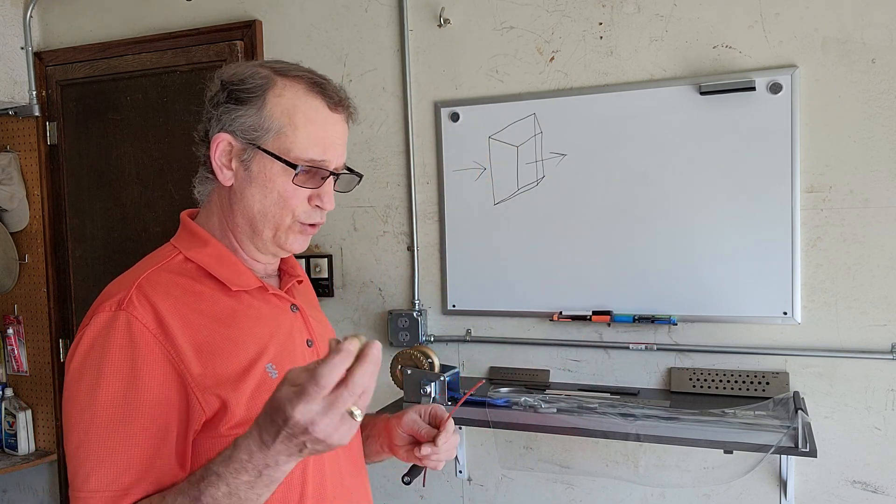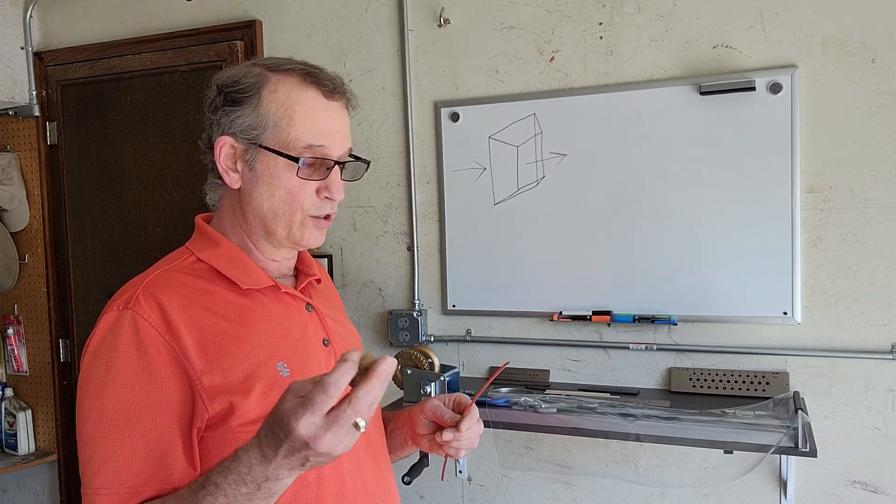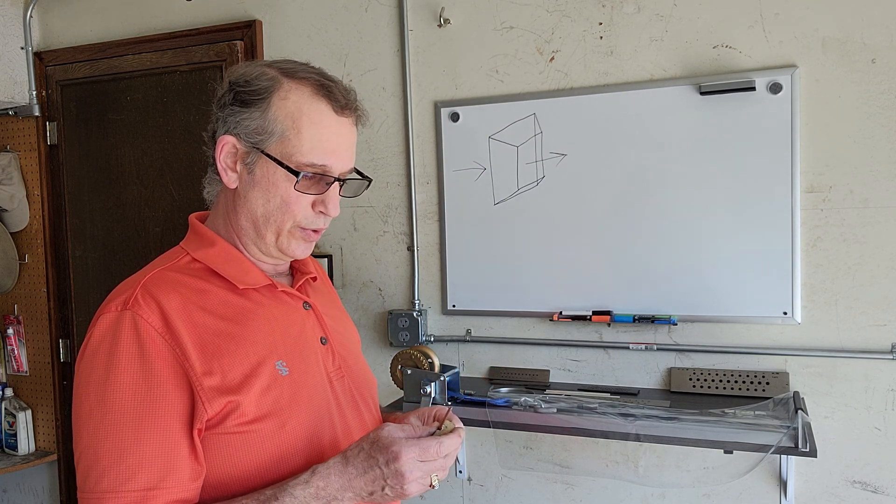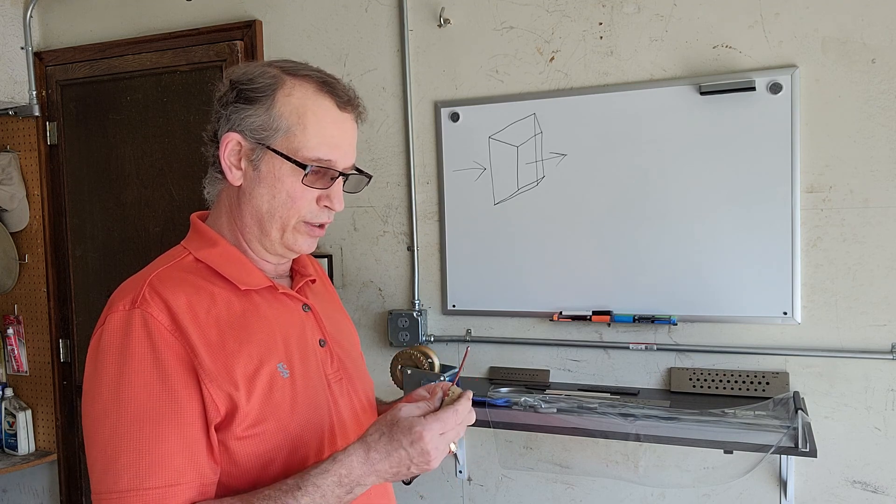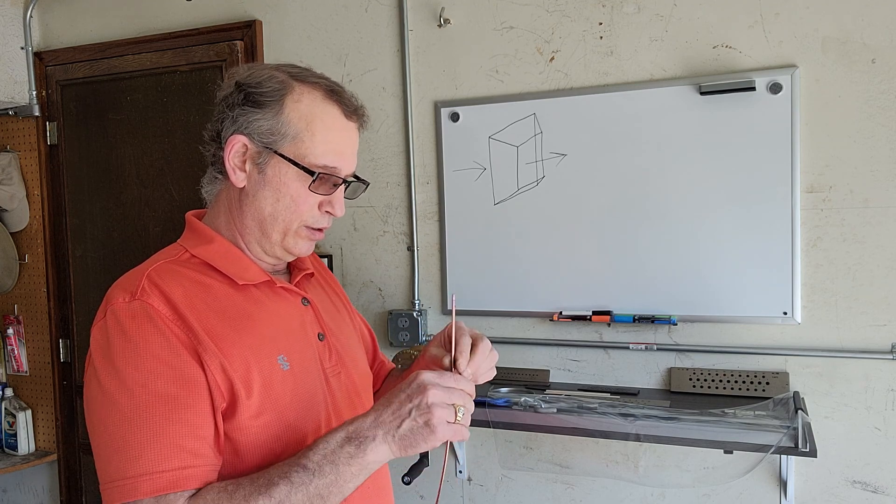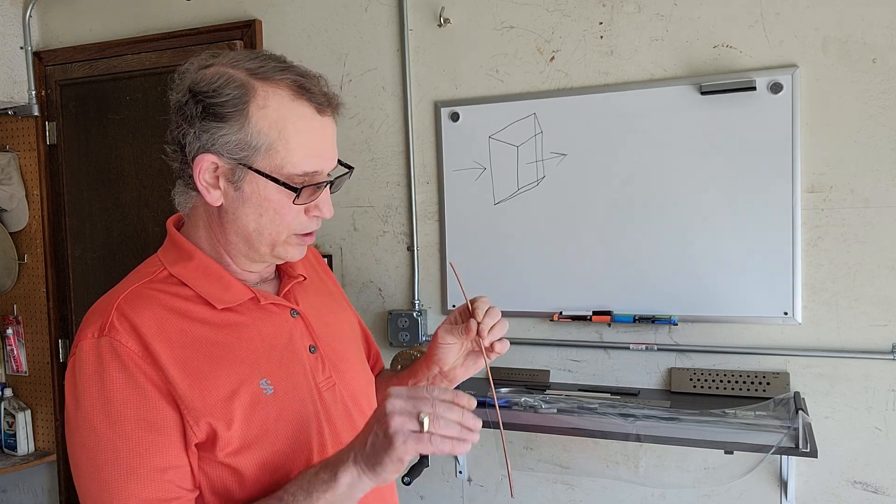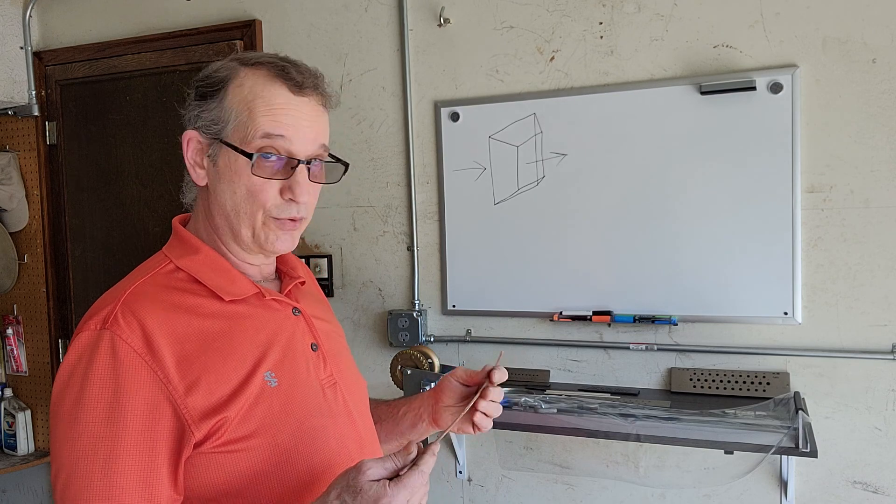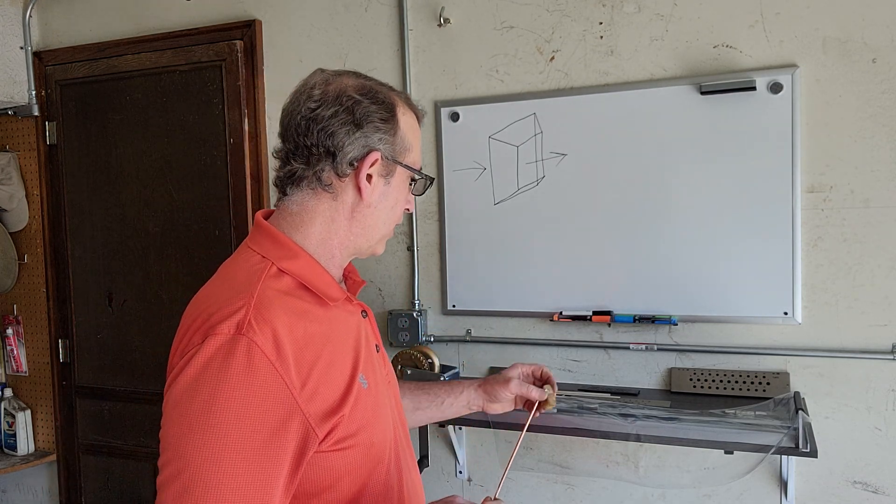Before we begin pulling though, I want to apply some kind of lubrication to the wire. Here I have just a chunk of beeswax. Beeswax works great for lubricating the dies and the wire and keeping the wire from damaging the drawing plates or from the drawing plates being able to damage the wire. So a little lubrication is good, beeswax works great for that and it's an inexpensive fix for that.